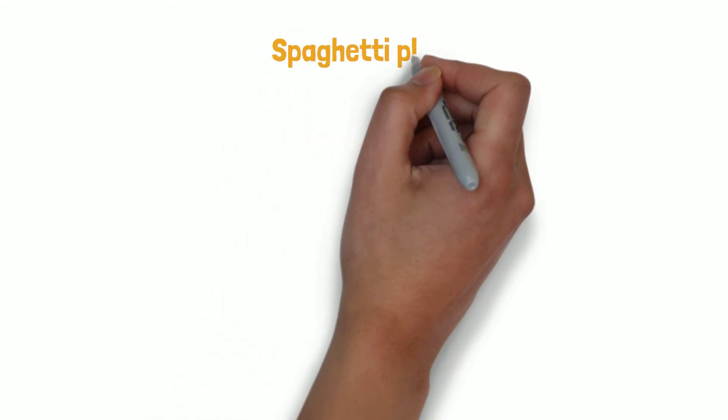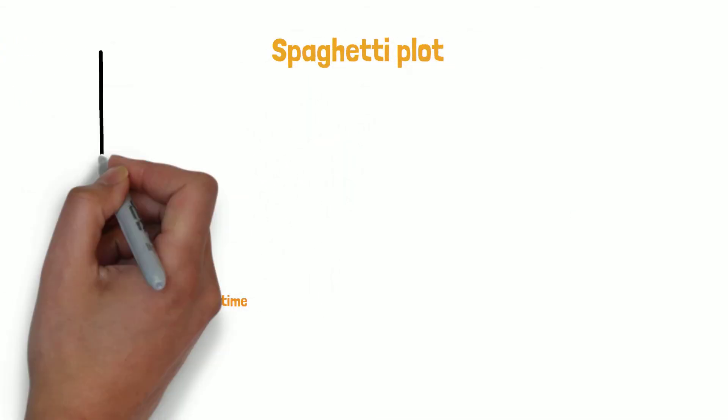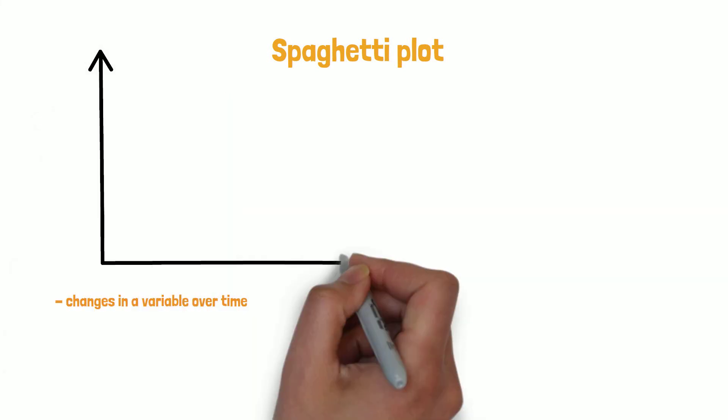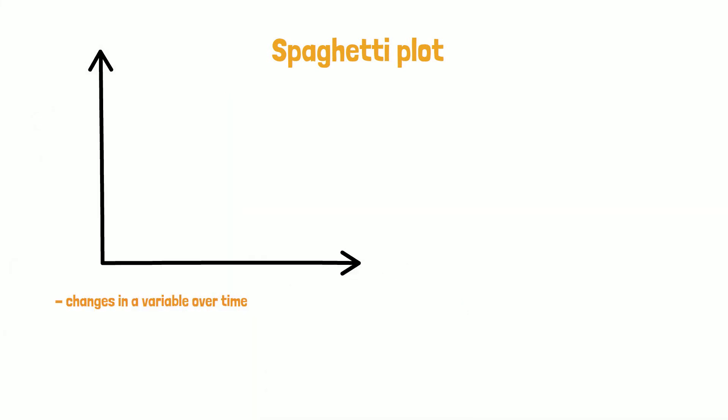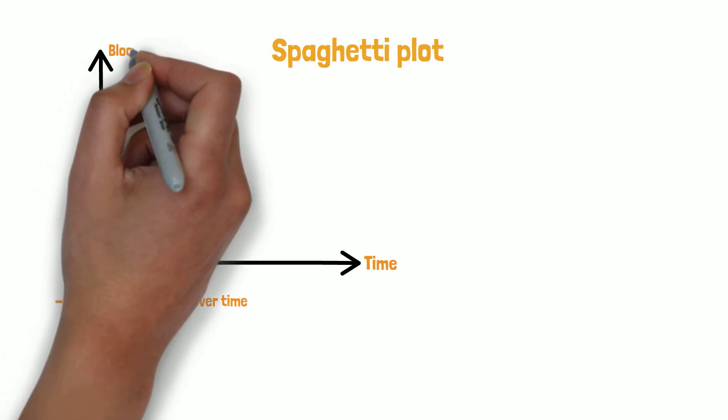Spaghetti plots are used to show changes in a certain variable over time. The advantage is that it can be shown for several patients. The change in time, for example, of the blood pressure for one person is then easy to follow.